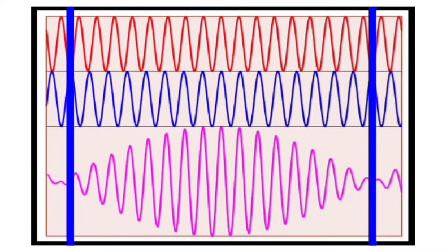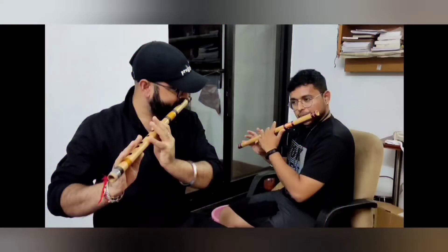We should remember that this is different from standing waves. In the case of standing waves, the interfering waves come from opposite directions. In order to have a better understanding, my friend Shubham and I tried to produce beats by playing the same note on flute and slightly changing the frequency in one flute.